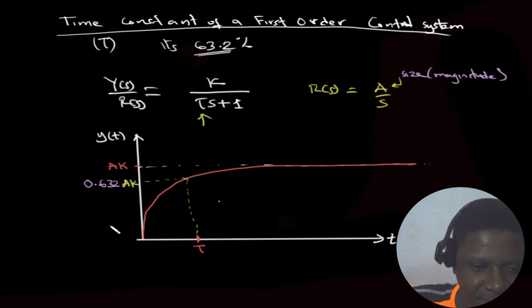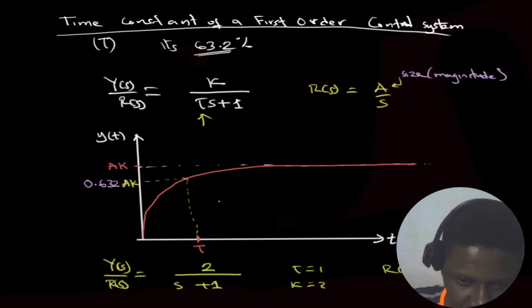Let's say we have now, from this system, Y of S over R of S equals 2 over 1 times S plus 1. As you can see here, tau equals 1 and K equals 2. And let's say our R of S equals 5 over S. So, what do we expect here? We should expect that our final value will be 2 times 5, so final value will be 10. And our time constant tau will be 1.